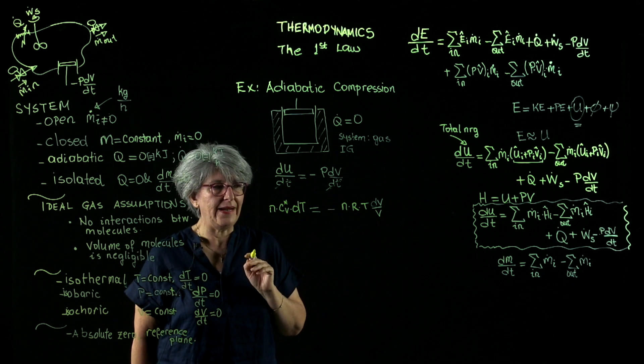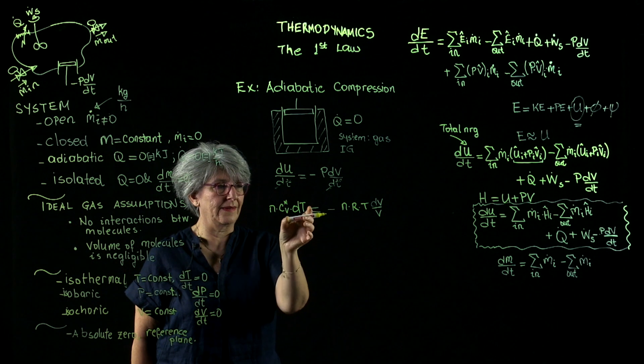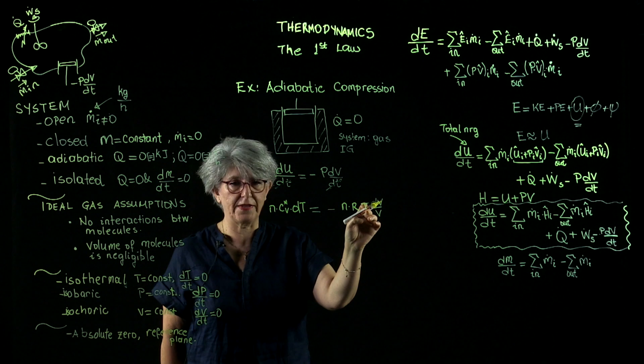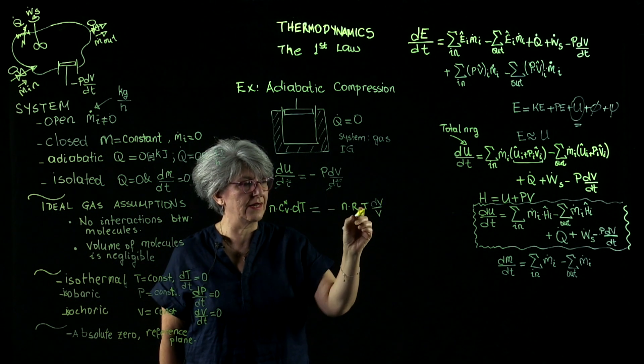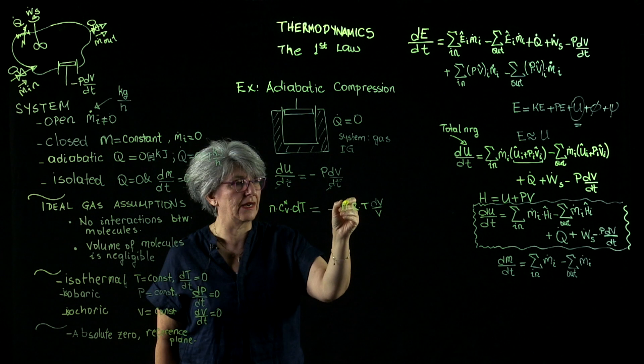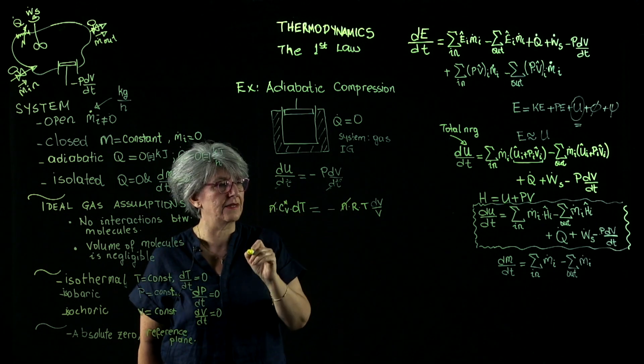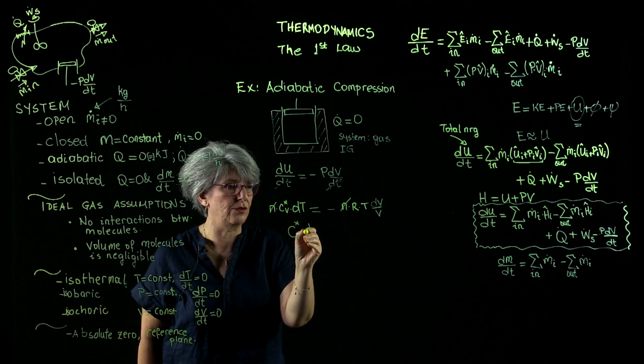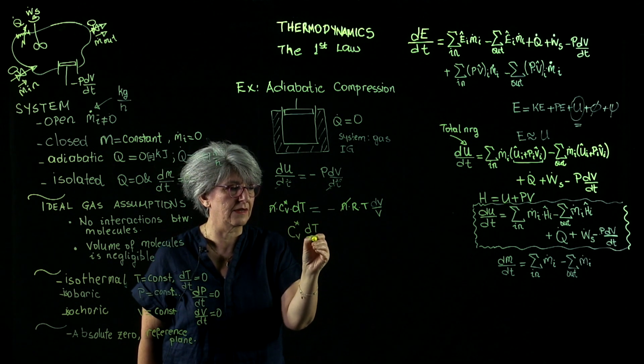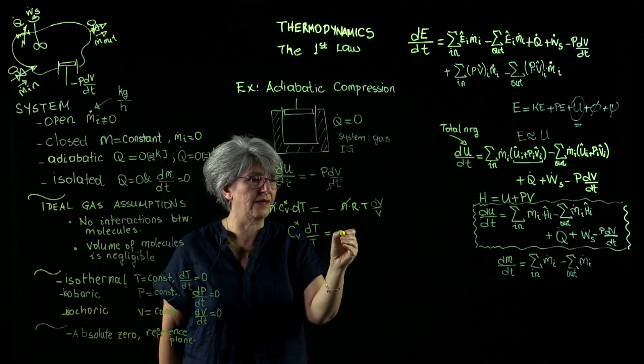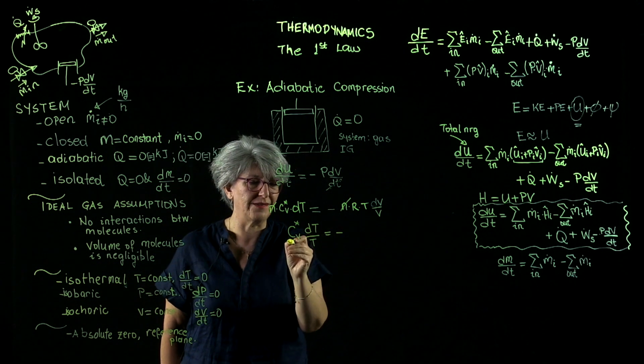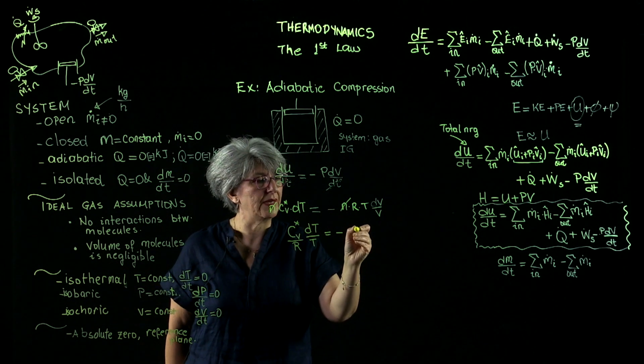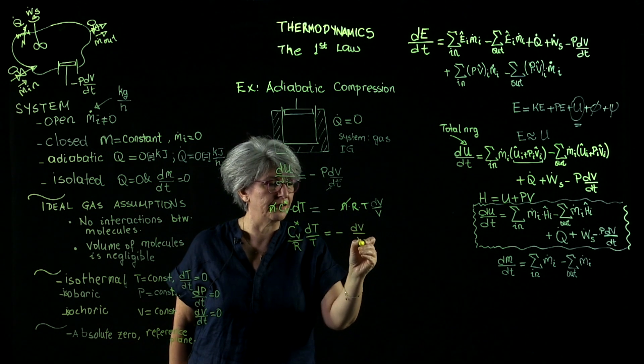Now, I have a temperature containing term on this side. I have a term reflecting temperature on that side, which I will transfer here. I will cancel n. I will have cv* times dt/t to be equal to minus r times dv/v.